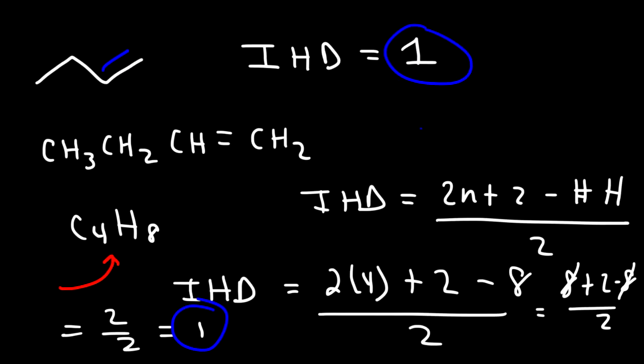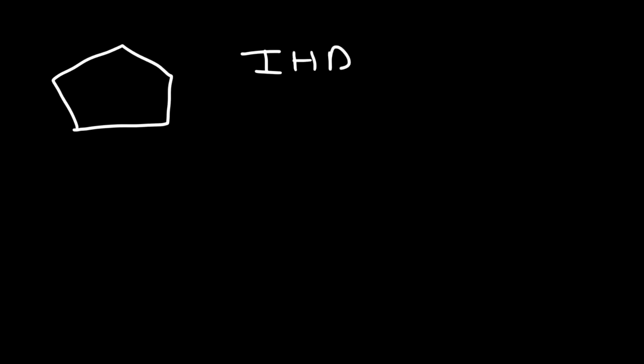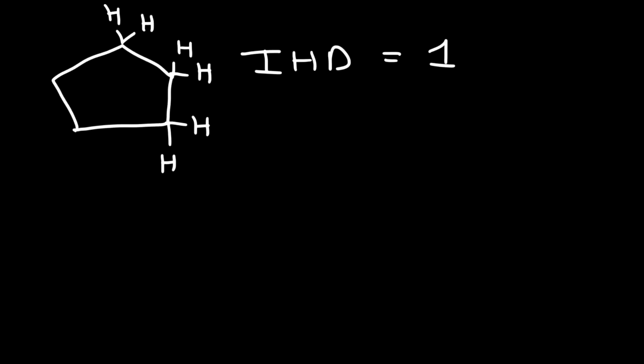What about a ring? Consider cyclopentane — a ring has an IHD of one, meaning one degree of unsaturation. Each carbon atom in the ring is bonded to two other carbons, so each has two hydrogen atoms, giving a molecular formula of C5H10.